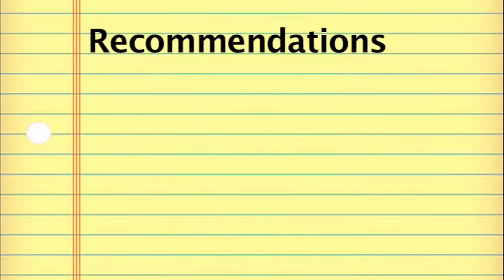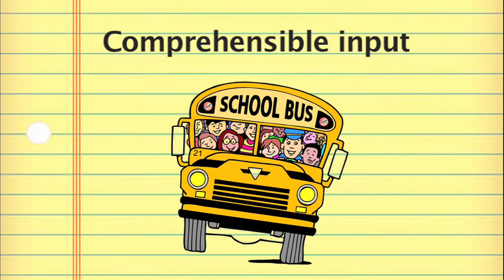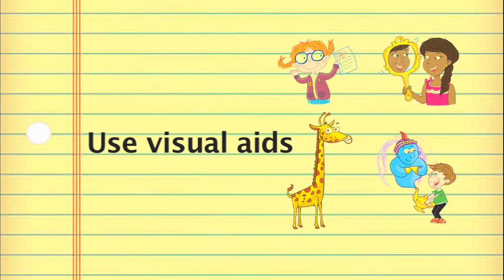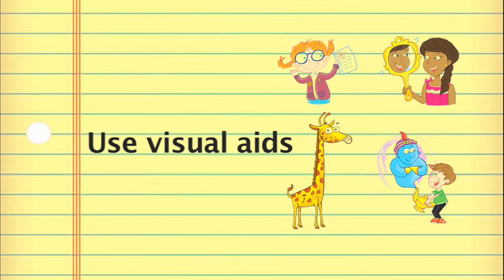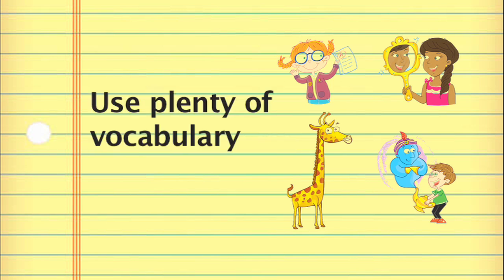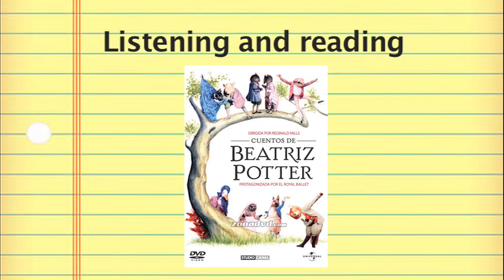Finally, four recommendations for the English class. First, there should be a lot of comprehensible input. Second, whatever helps comprehension is important — visual aids are useful, as is exposure to a wide range of vocabulary rather than study of syntactic structures. Third, the focus in the classroom should be on listening and reading, and speaking should be allowed to emerge.